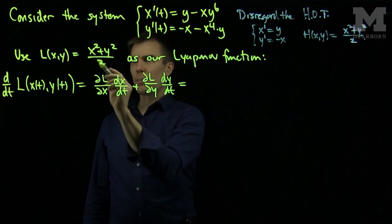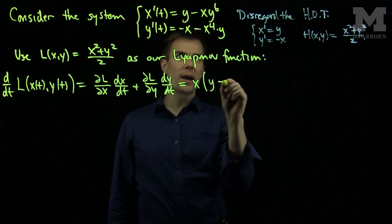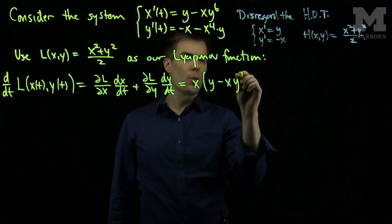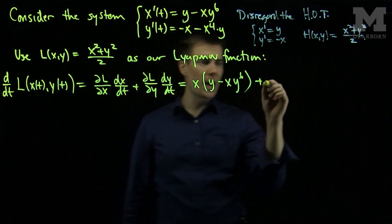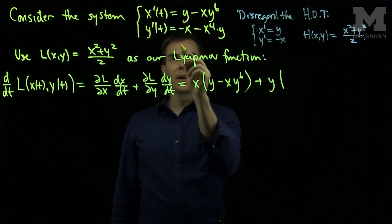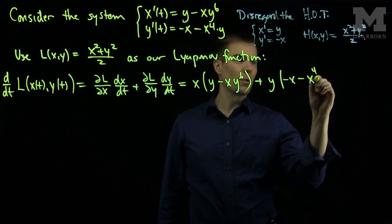Partial L partial x will be x, and dx dt is y minus xy to the sixth plus partial L partial y is y, and then y prime is negative x minus x to the fourth y.